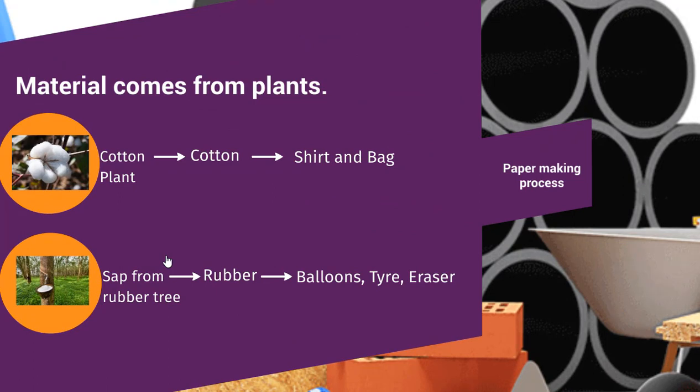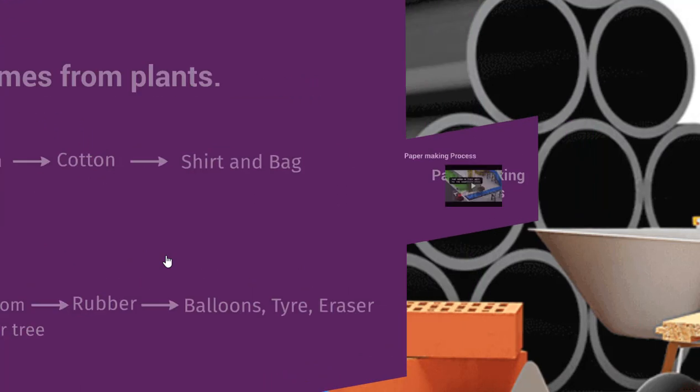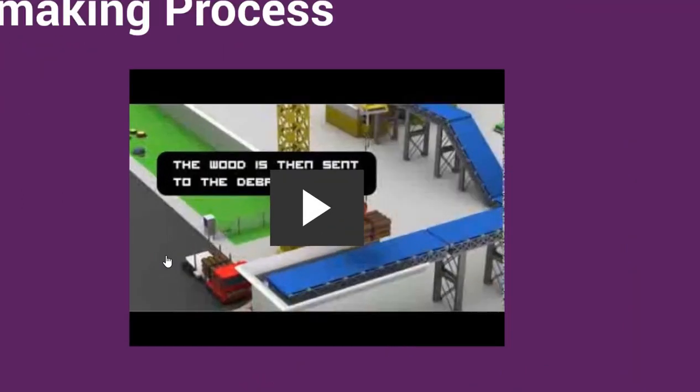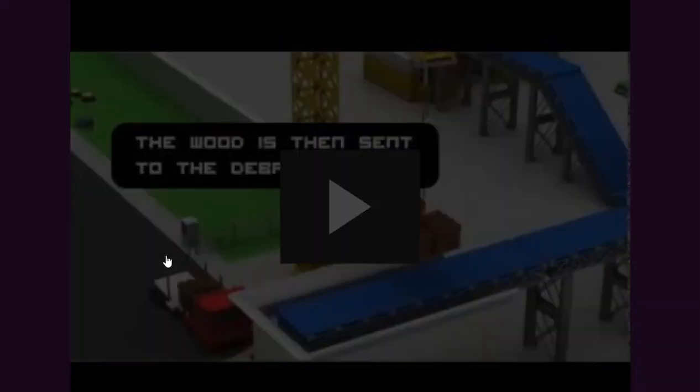Erasers, tires and balloons are made from rubber — rubber comes from the sap of the rubber tree. Paper is also made from plants. Here is a video of the paper-making process, so let's watch this video.